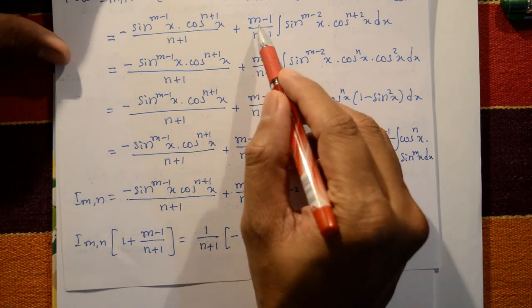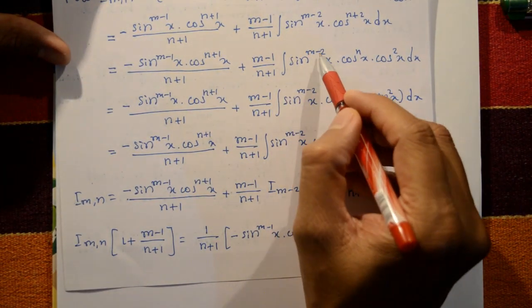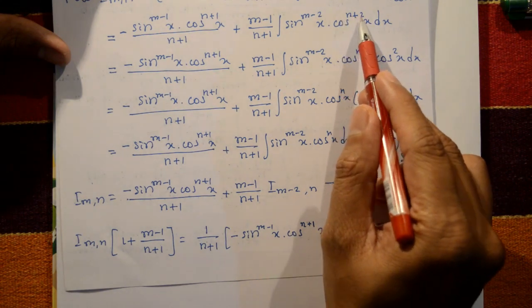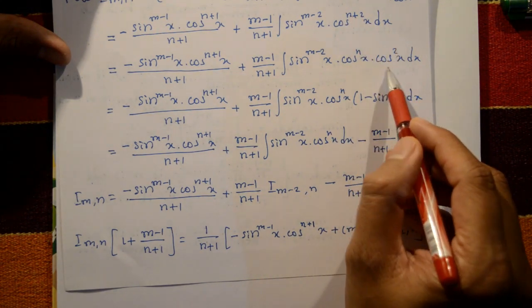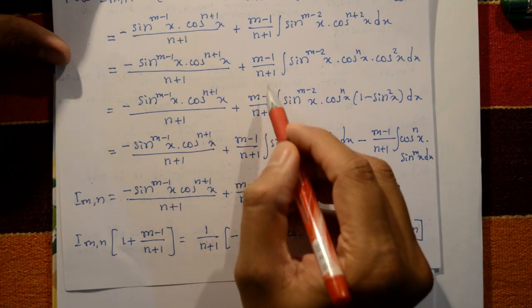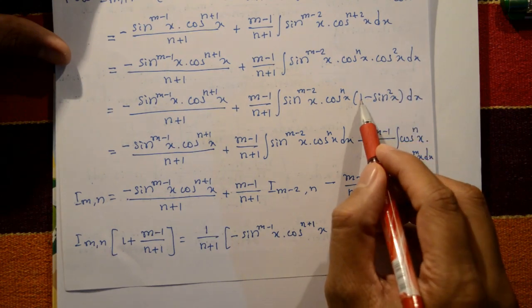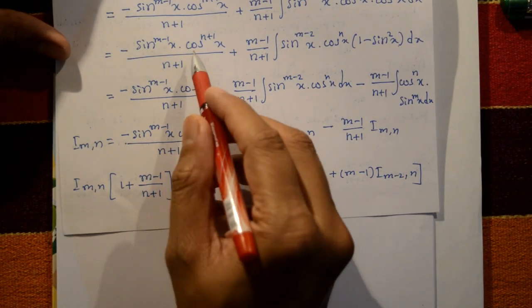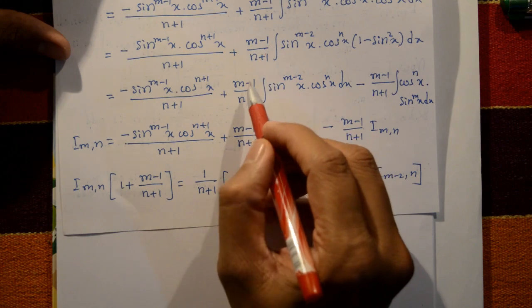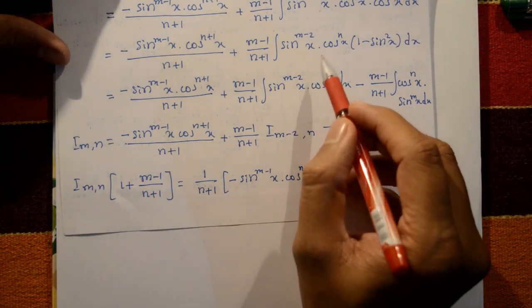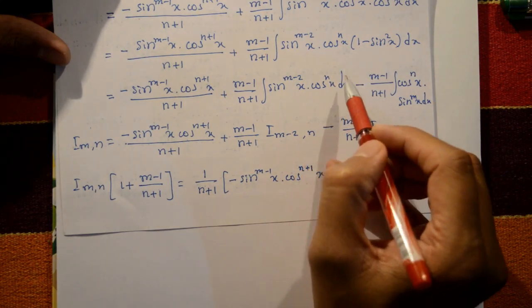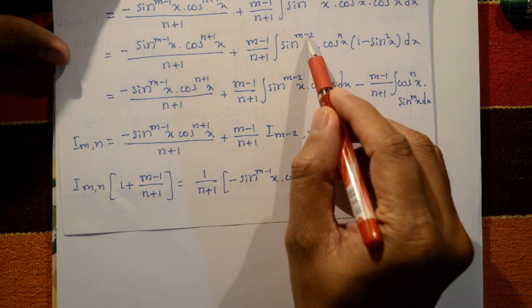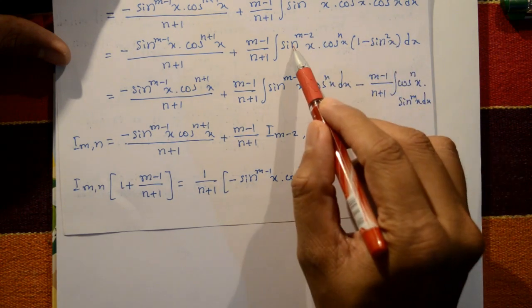Now separate cos^(n+2)(x) as cos^n(x)·cos²(x), and replace cos²(x) with 1 − sin²(x). So I_mn equals the boundary term plus (m−1)/(n+1) times ∫sin^(m-2)(x)·cos^n(x) dx, minus (m−1)/(n+1) times ∫sin^m(x)·cos^n(x) dx. The last integral is just I_mn, and the second-to-last is I_(m-2,n).